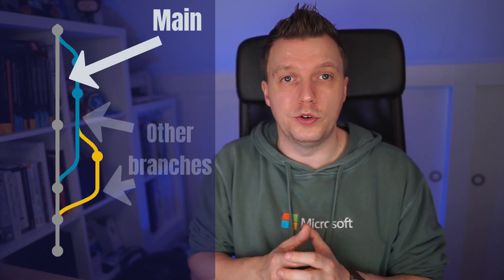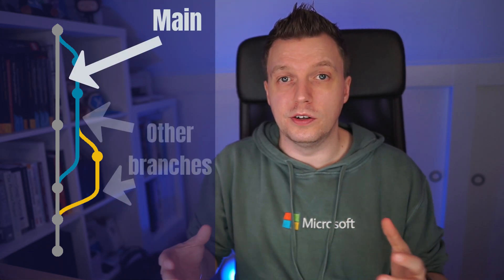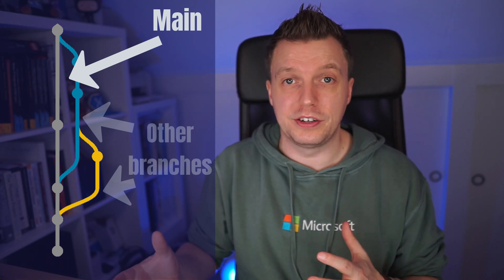Depending on your development strategy, it could also be that the main branch is protected. In that case, you can't push directly to the main branch — which is the main line that all changes have to come into — and you will need to open a pull request from a different branch. This approach is typically used to force developers to have their code reviewed by others as part of that pull request, as well as doing automated build pipeline checks before merging into the main branch.